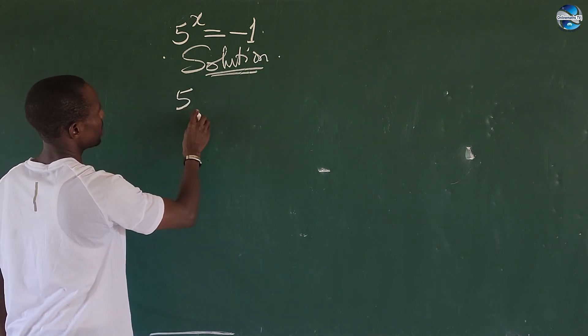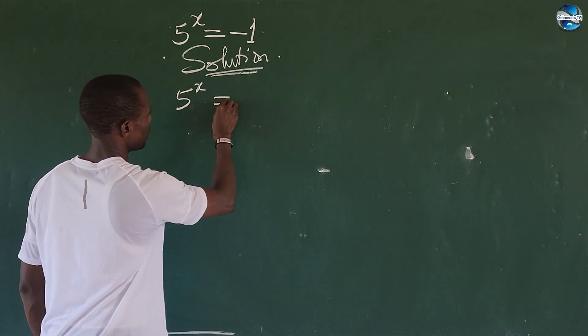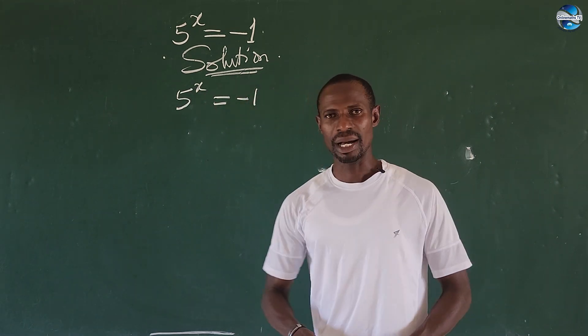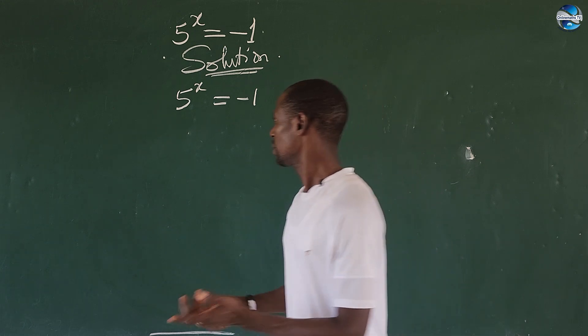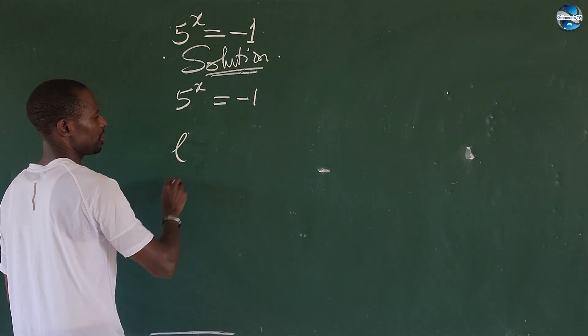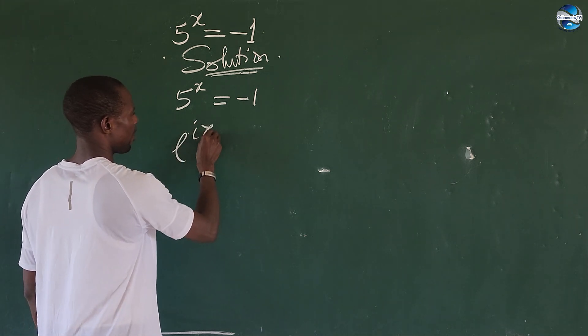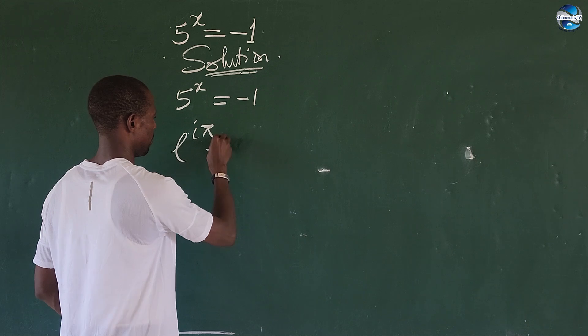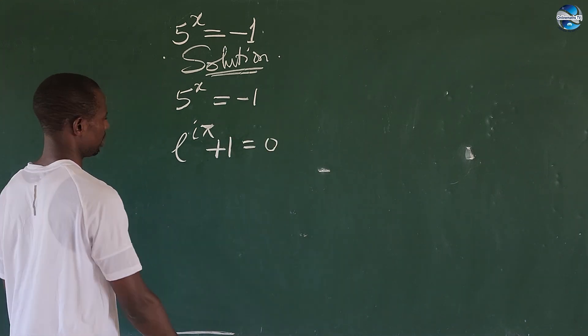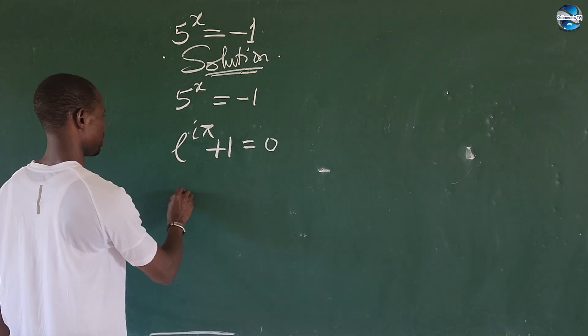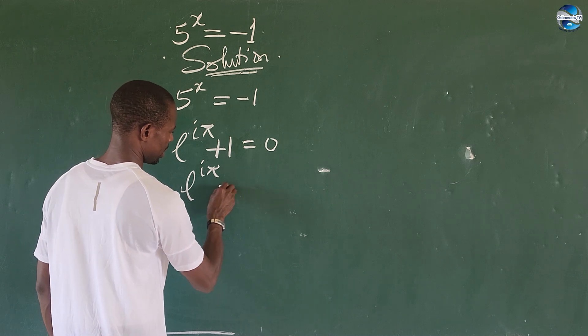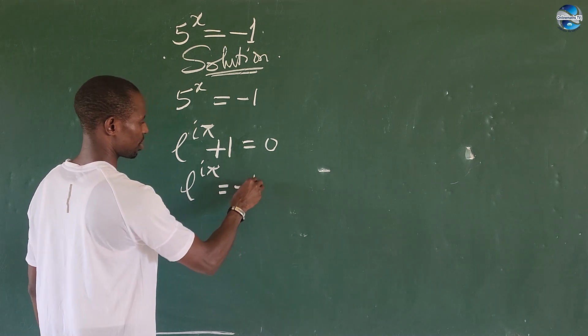So our question is 5 to the power of x equal to minus 1. Quickly, we have to bring the Euler identity. It says that e to the power of i pi plus 1, this is equal to 0 here. So if we move this to this side, it's going to give us e to the power of i pi is equal to minus 1 here.